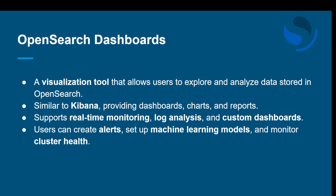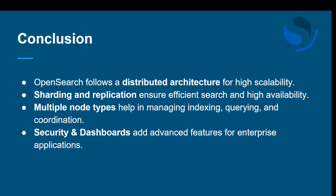In conclusion, OpenSearch follows a distributed architecture. We discussed the core components in detail. Sharding and replication ensure efficient search and high availability — if one node goes down, another comes up without any data loss. Multiple node types help in managing indexing, querying, and coordination. Security and dashboards are advanced features for enterprise applications, helping to analyze and present data. That's it for this video; we'll start with module 4 in the next session. Thanks a lot for joining!